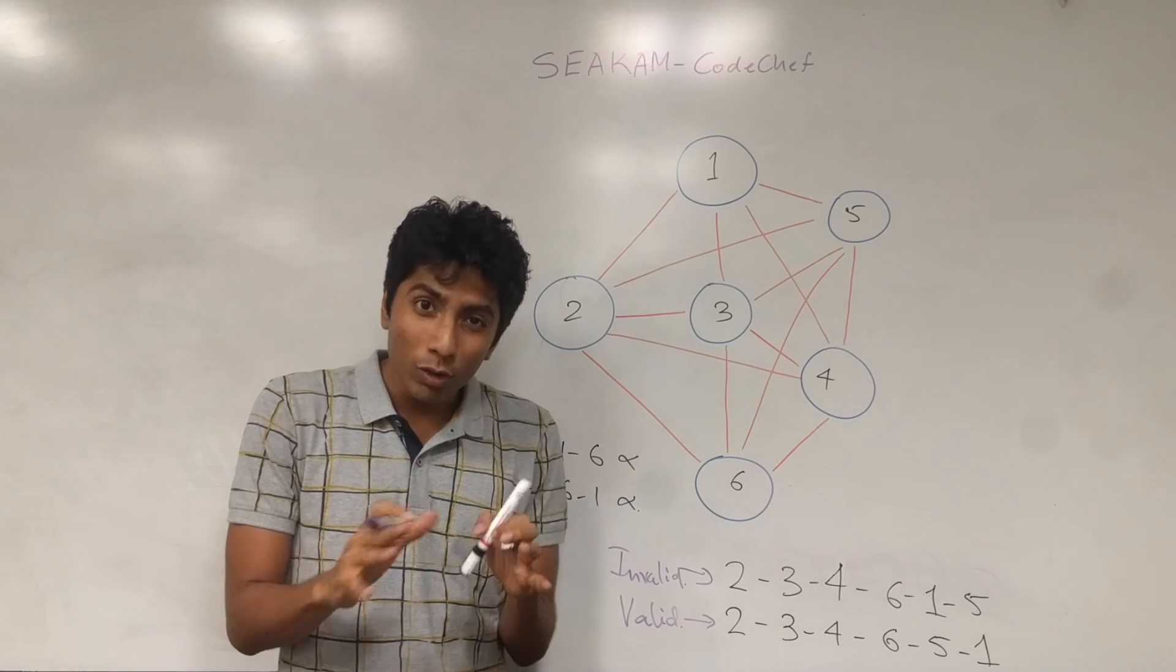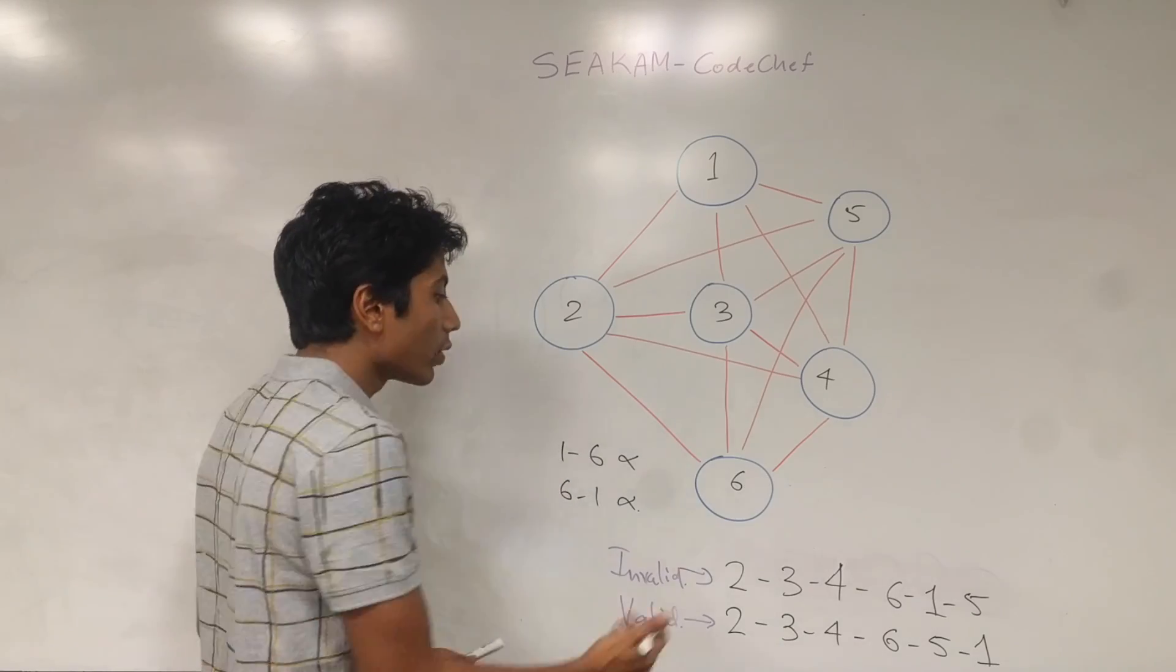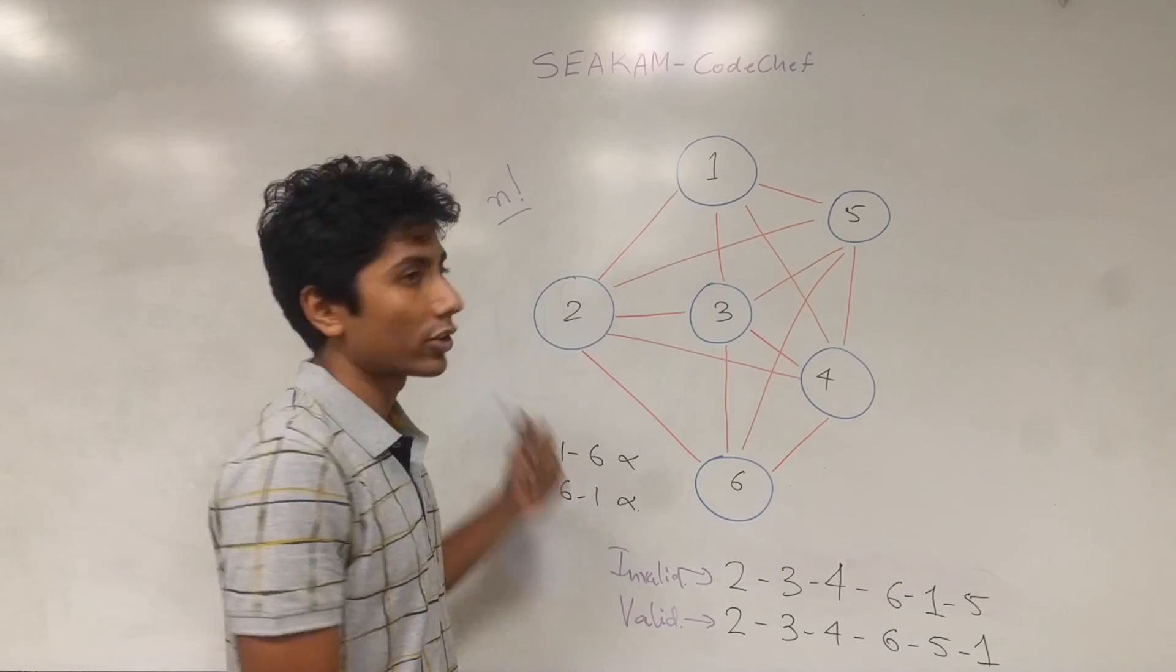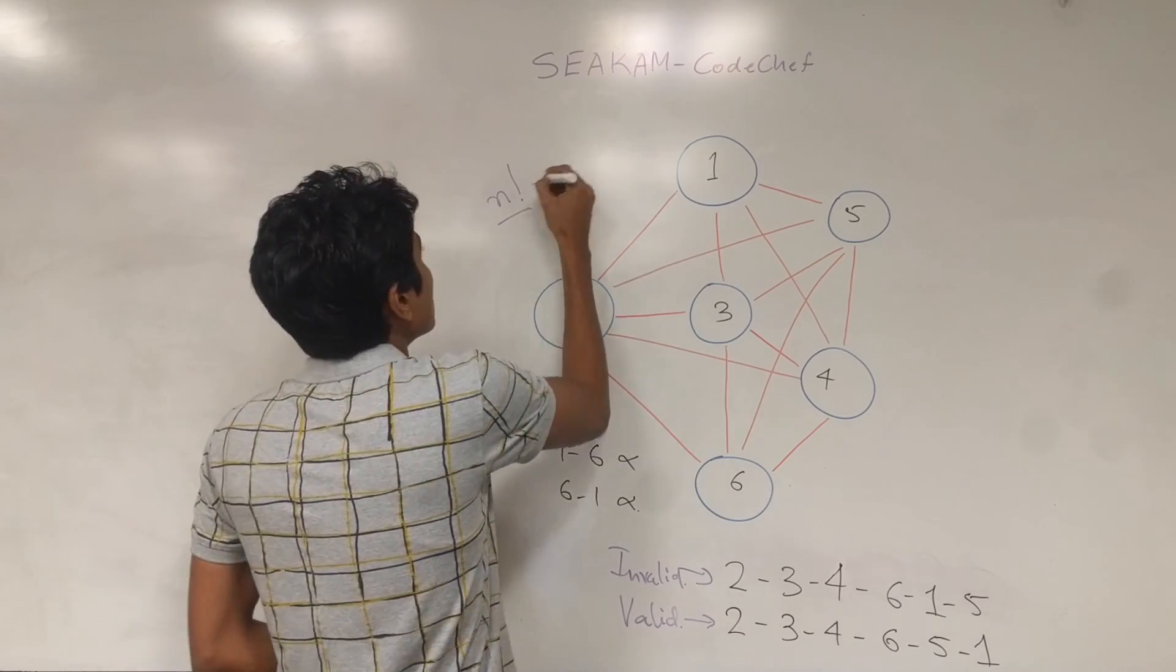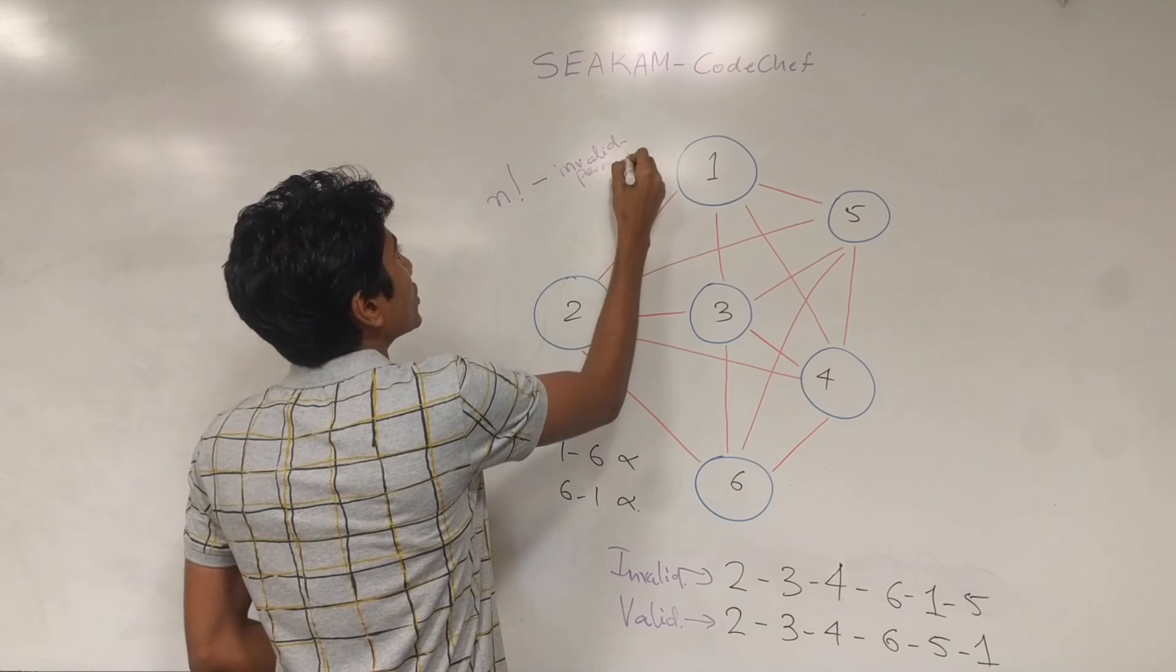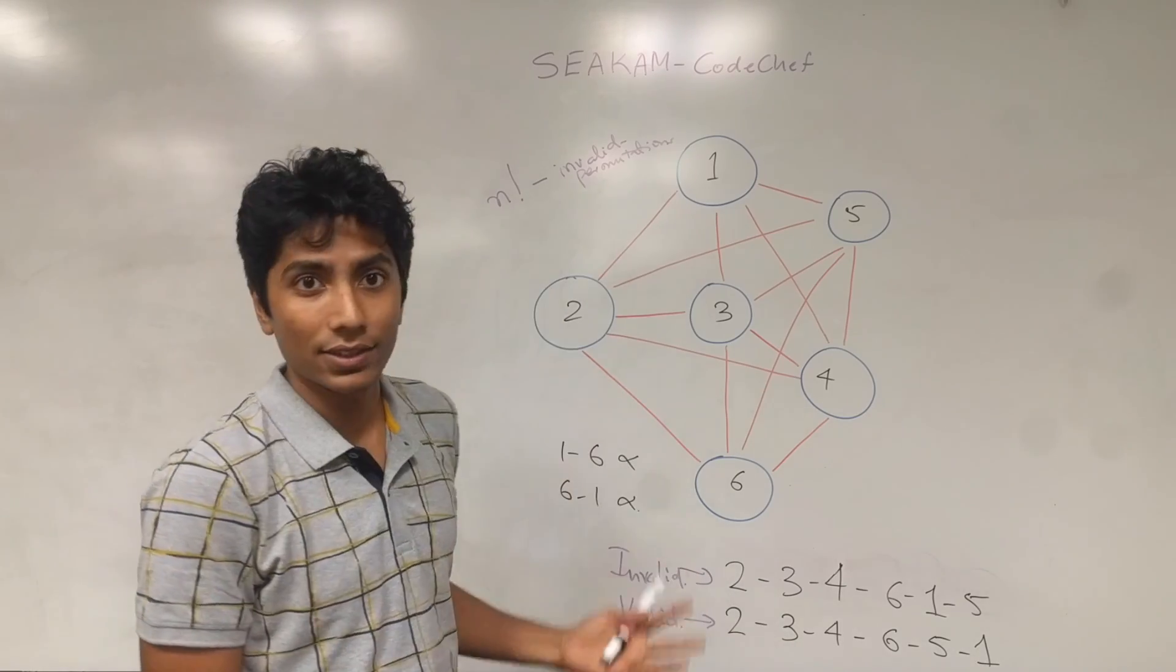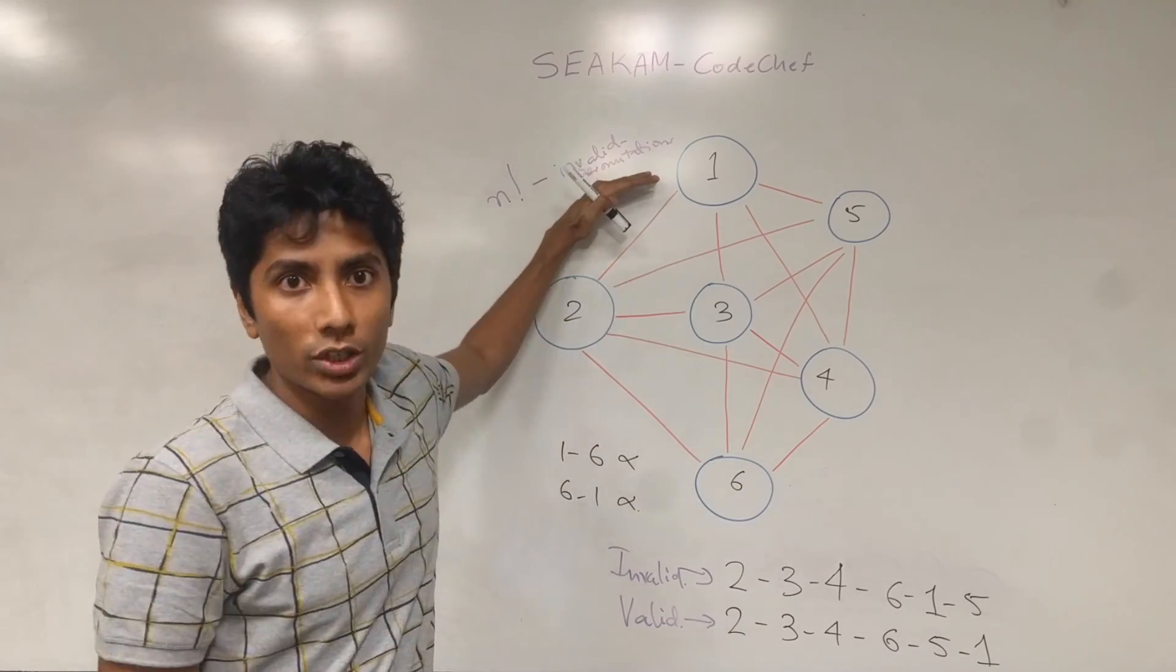Now because we have an almost complete graph, what that means is if this graph is complete, then we would have n factorial permutations which would be valid. We could lay the graph nodes in any way that you wanted. They are n in number, so n factorial would have been the answer. What we need to find is the number of valid permutations which is n factorial minus the number of invalid permutations. Invalid permutations are stuff like this. We need to count them and then output the answer.